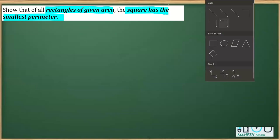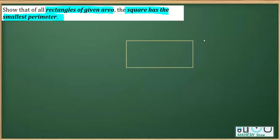So by that, it means to say that if we have a rectangle like this, whose area is fixed, out of all such rectangles drawn, the square will have the minimum or the smallest perimeter.